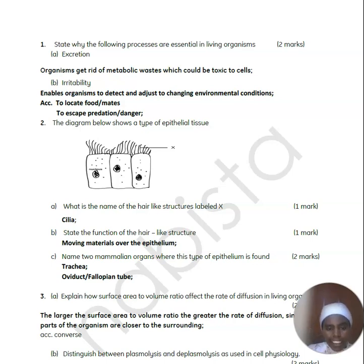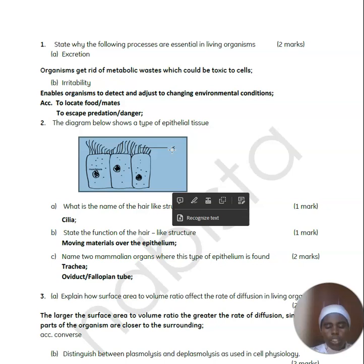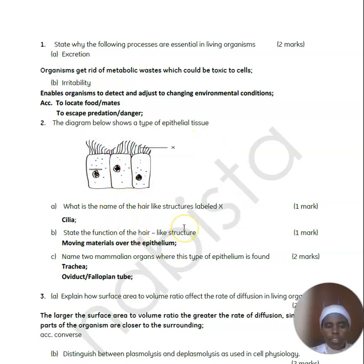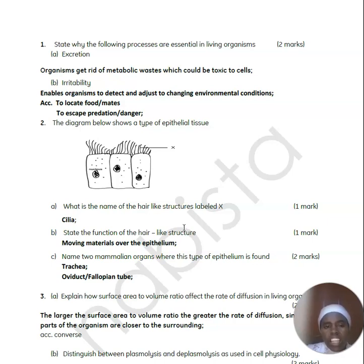The diagram below shows a type of epithelial tissue. X is the name of the hair-like structure labelled X — it is called cilia. The function of that hair-like structure is to move materials over the epithelium; for example, it moves bacteria upward and then you swallow. Two mammalian organs with this type of epithelium: it is found in the trachea, where it traps bacteria and dust particles and moves them up trapped by mucus, which you swallow to be killed by hydrochloric acid in the stomach. It is also found in the oviduct or fallopian tube, where it helps in movement of the ovum.